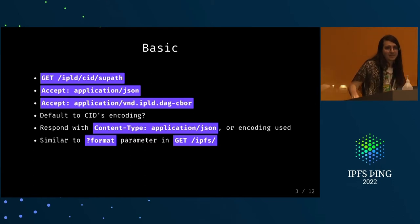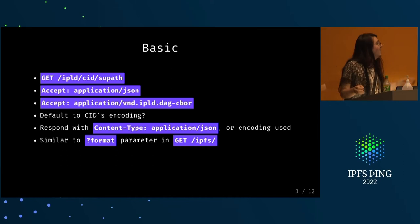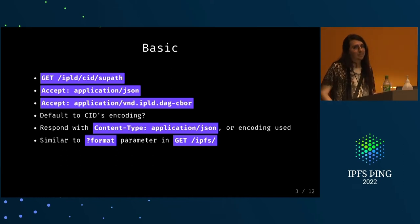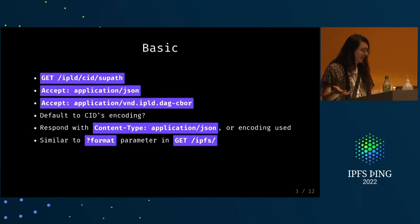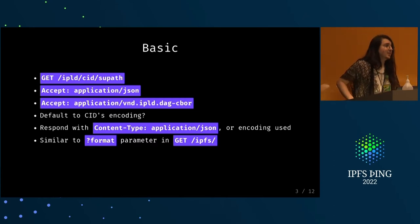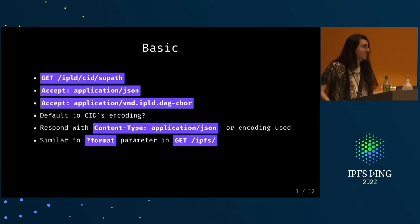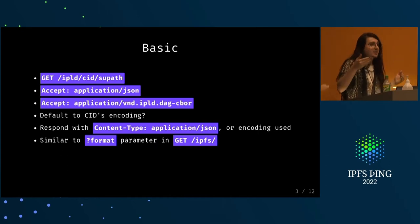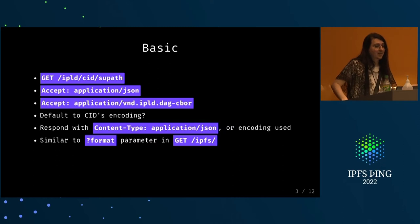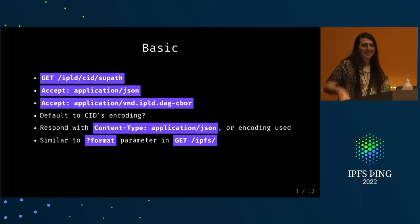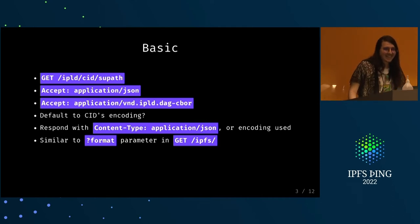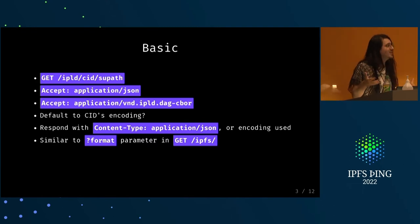In HTTP land we have the accept header, which tells the server you want the thing at this path but in a particular format. We can use it with IPLD to hint at which encoding we want back. JSON might be easier for a web application to parse than DAG-CBOR, but the data itself might be stored in DAG-CBOR. So with the accept header we can tell it that we want to accept JSON, or we could give it one of the custom MIME types. We can leverage IPLD's way of converting between different formats to make it easier for applications to deal with data.